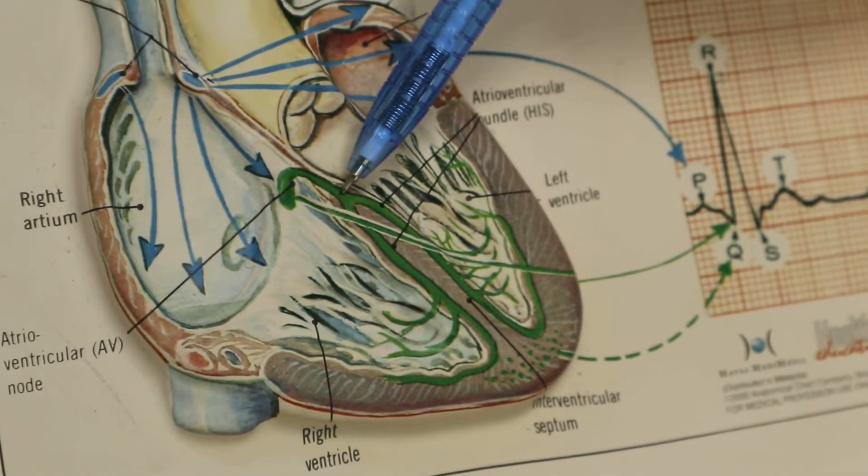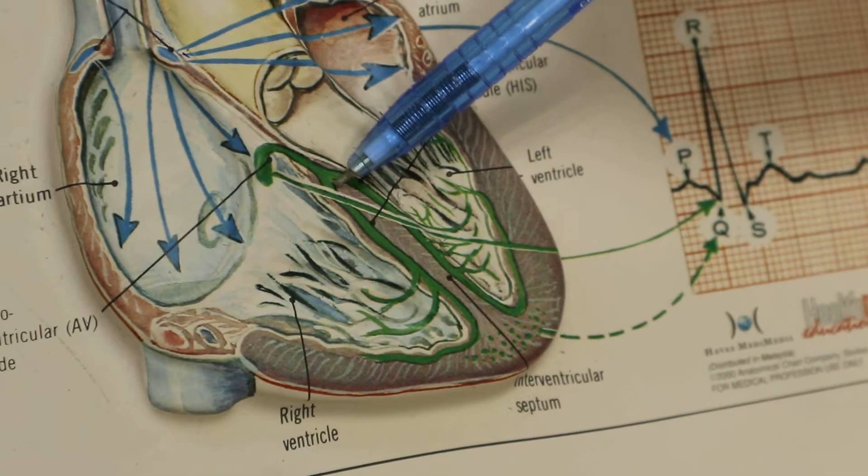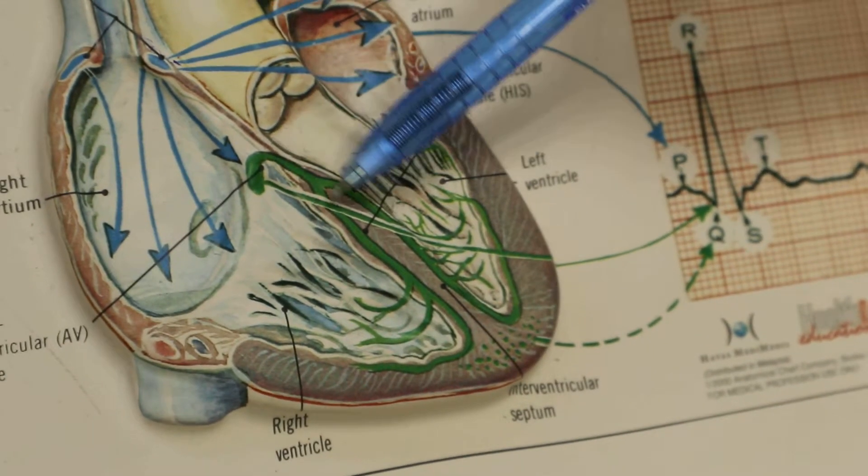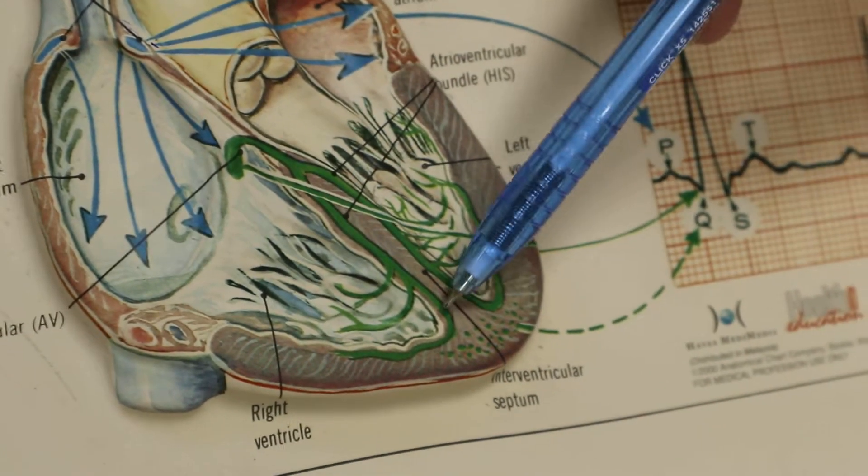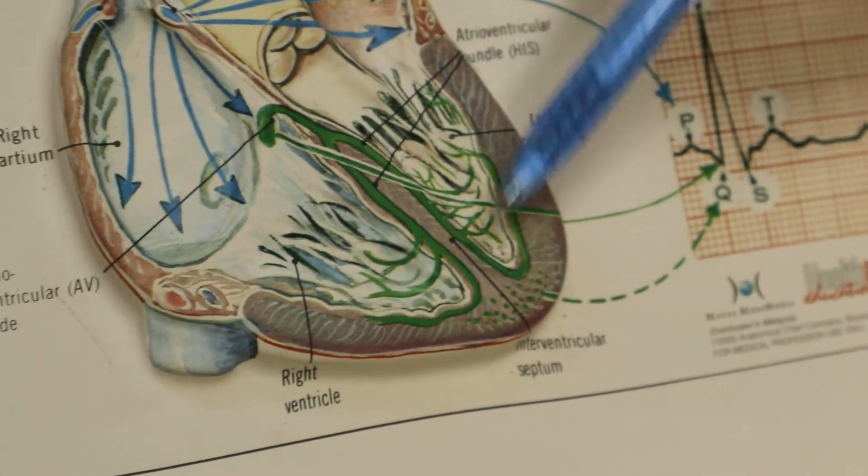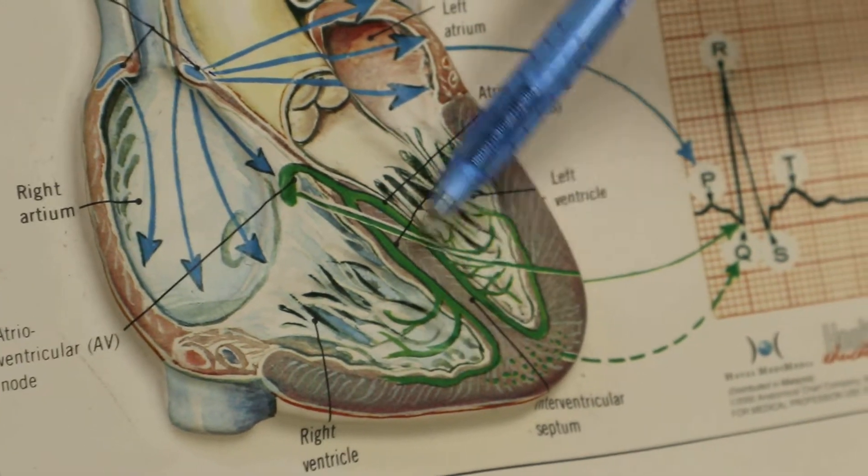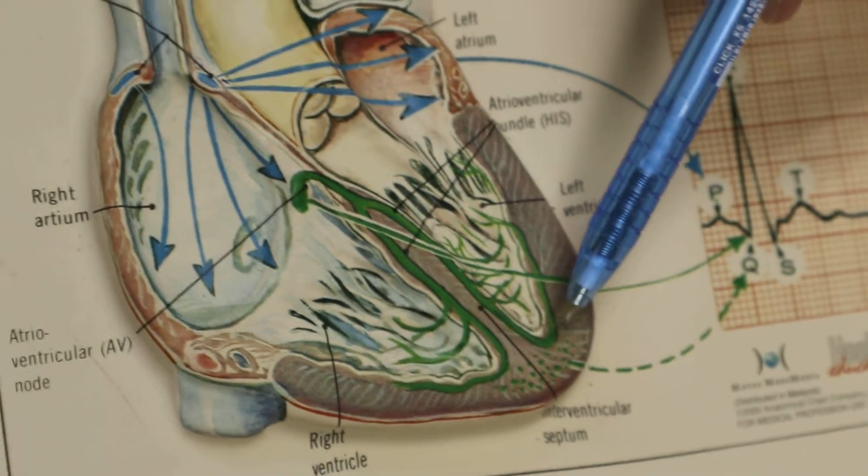It then goes down to the bundle of His, where there are separate right and left branches. The wave passes along these branches to the Purkinje fibers. This excitation helps the ventricles to contract.